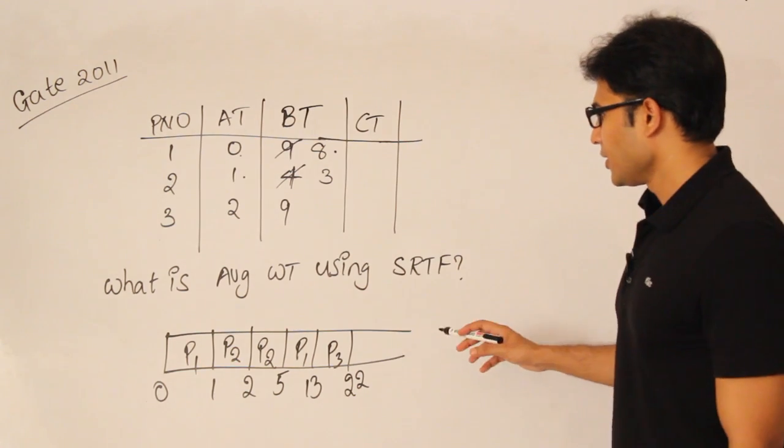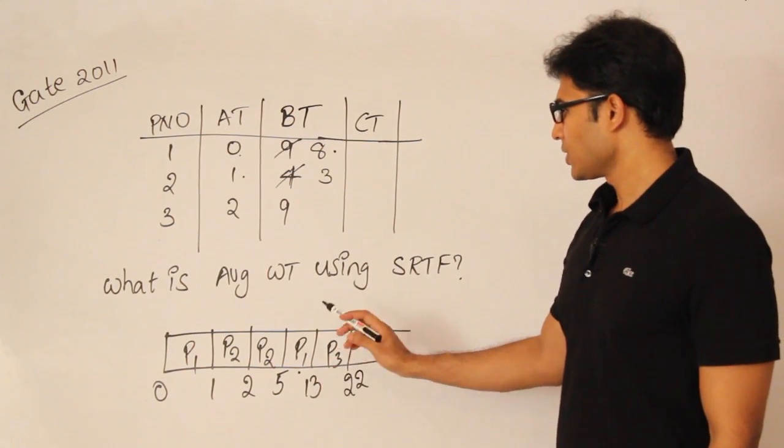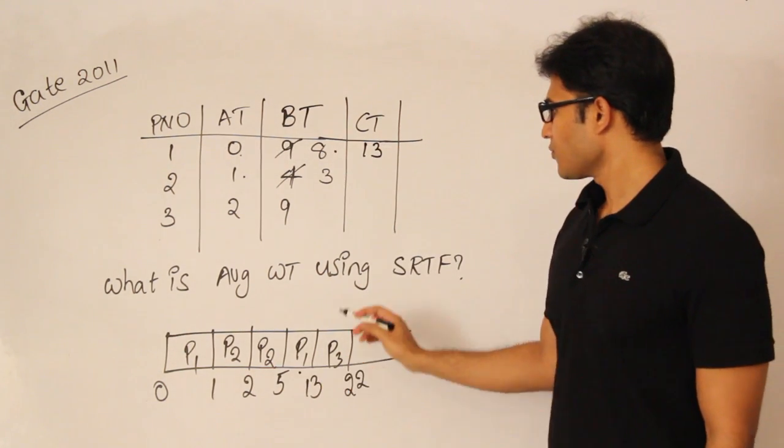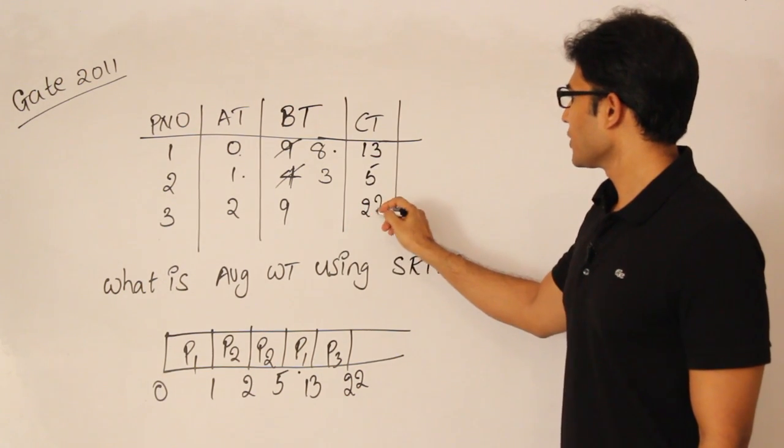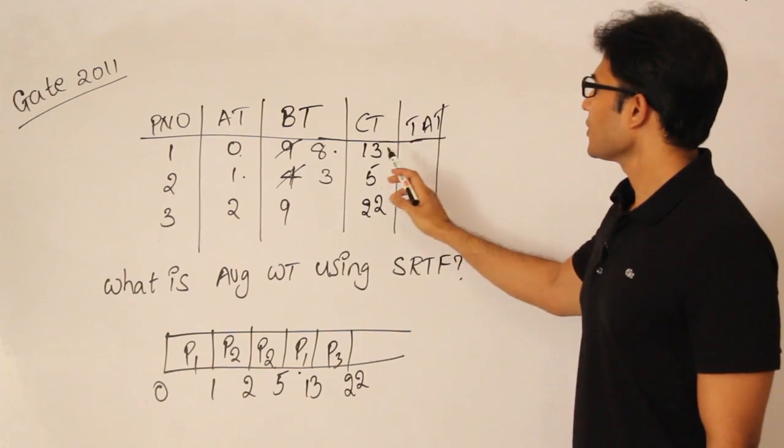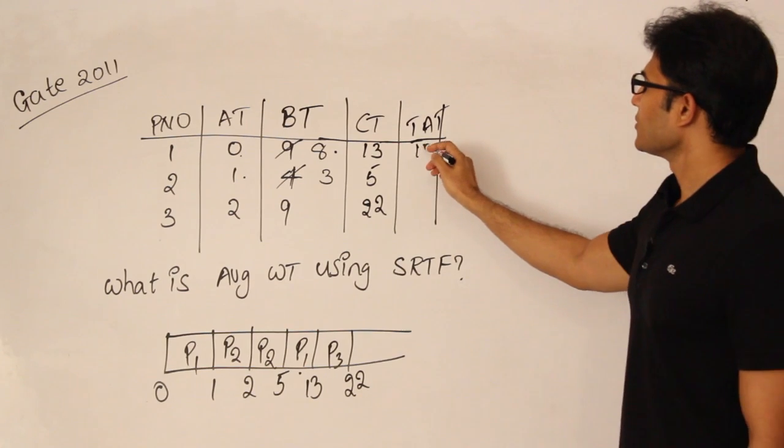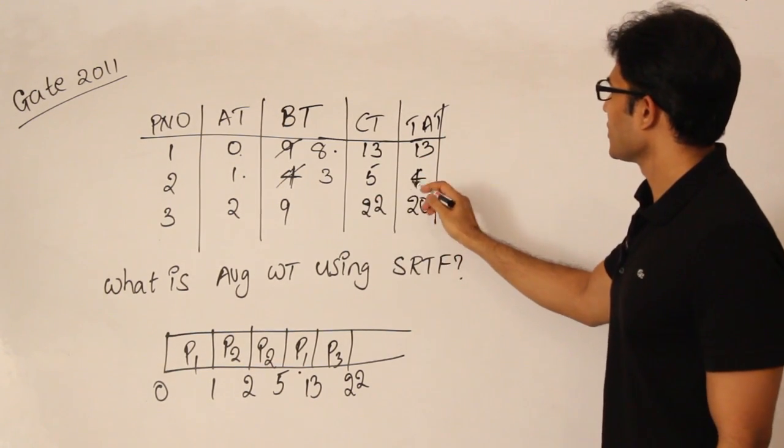The last time wherever a process has occurred is the completion time. For P1, P1 has a completion time of 13. P2 has a completion time of 5. P3 has a completion time of 22. Turnaround time is completion time minus arrival time. So here it is 13, here it is 4, and here it is 20.